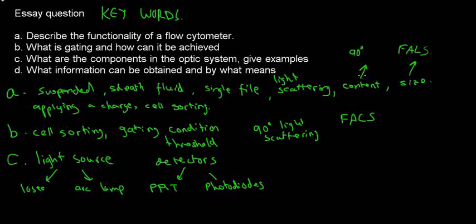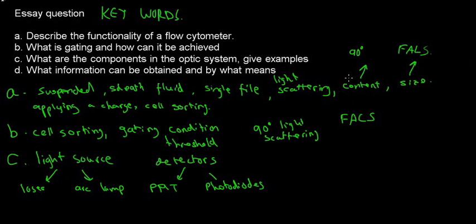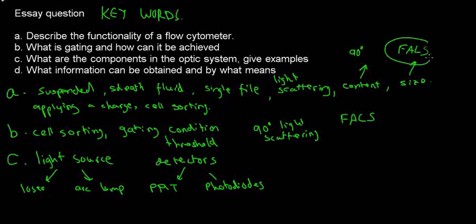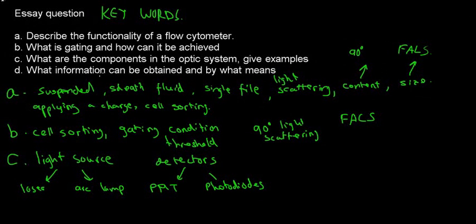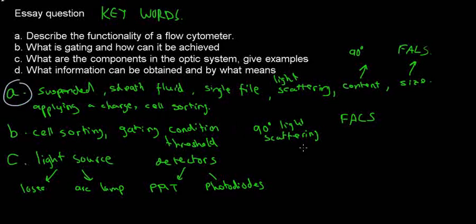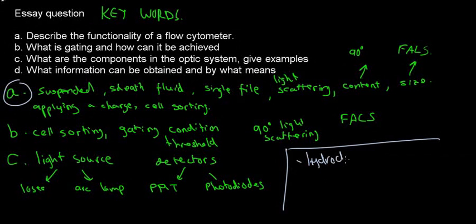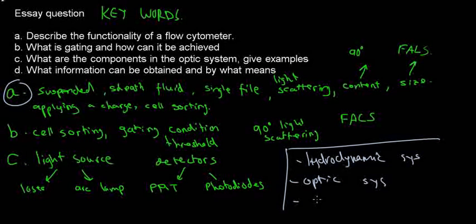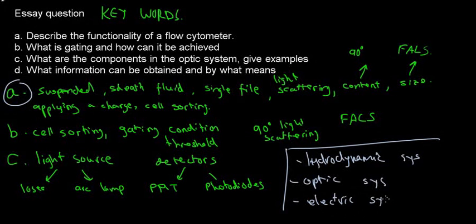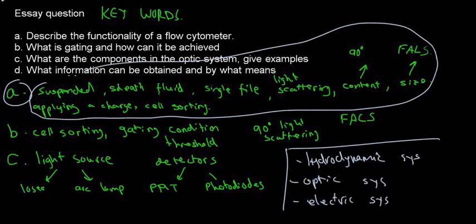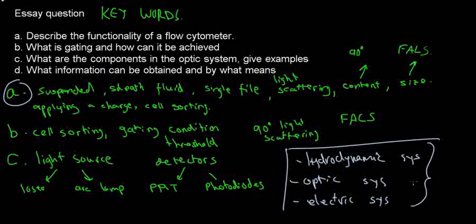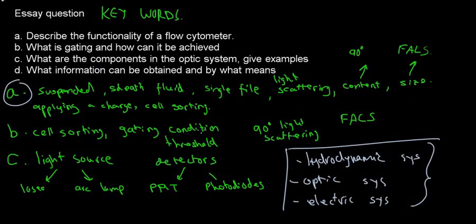Question D: What information can be obtained, and by what means? Content of the cell is obtained at 90-degree light scattering from fluorescence, and size from the forward angle light scattering. If you really want to impress, you can add to Question A that the flow cytometer works on a hydrodynamic system, an optic system, and an electric system — a more sophisticated way of showing you know what you're talking about, though it's not a must.